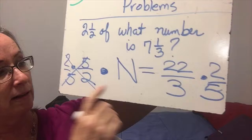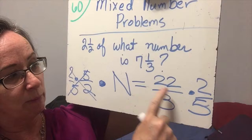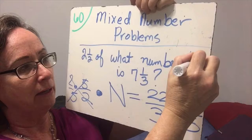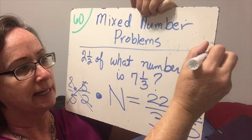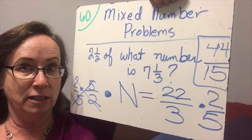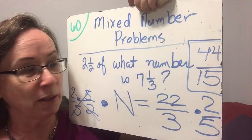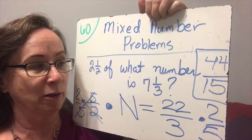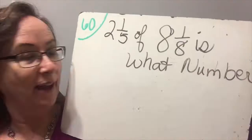The left side cancels and we have n all by itself, which is our goal. On the right we have 22 over 3 and 2 over 5 — nothing cancels — so n equals 44 over 15. Your book leaves the answer as 44/15. They could turn it back into a mixed number but chose not to because it's extra work. In algebra we just leave it in improper form, and that's just fine.